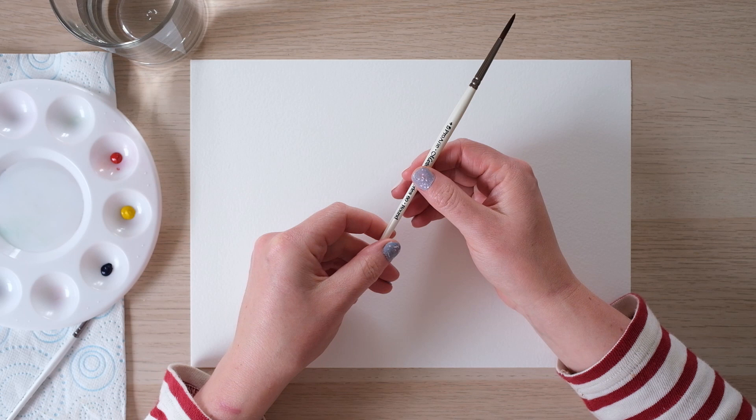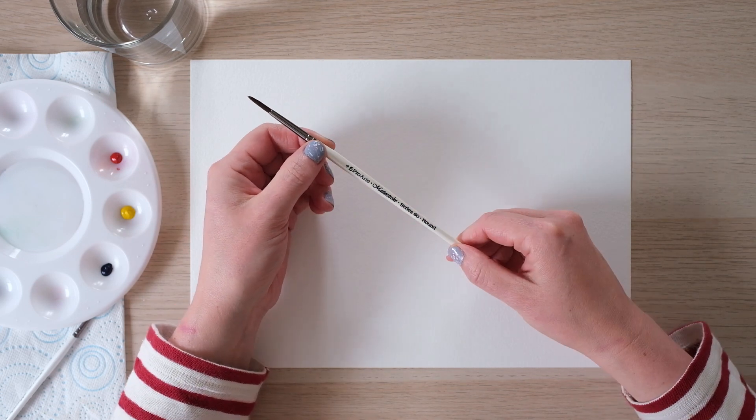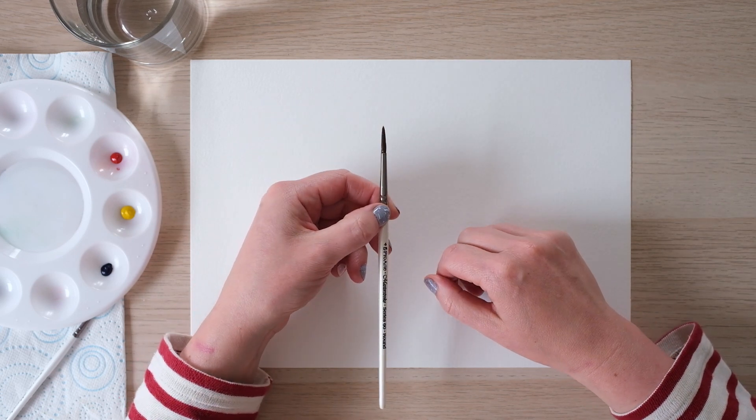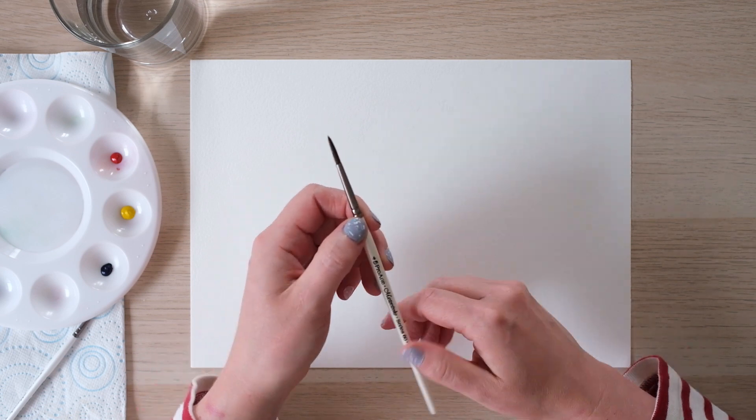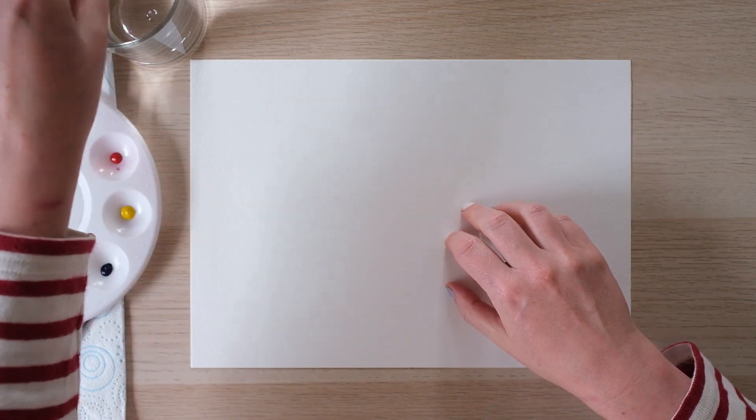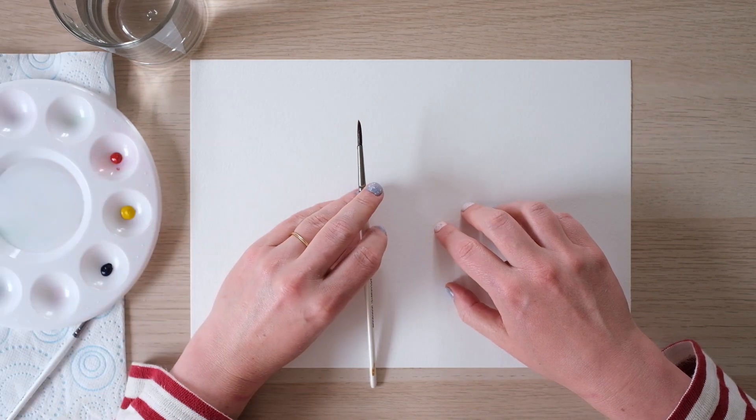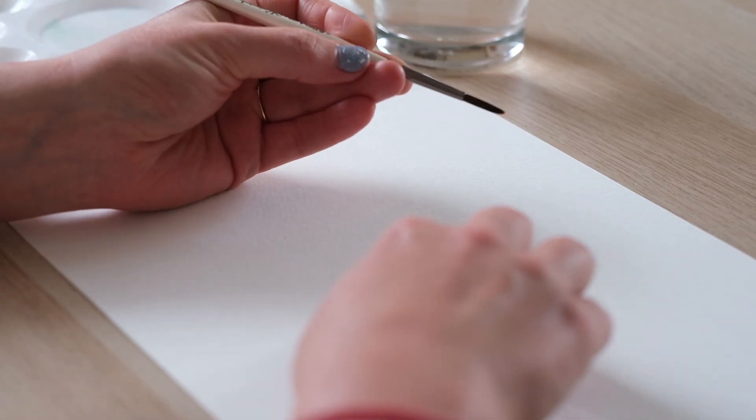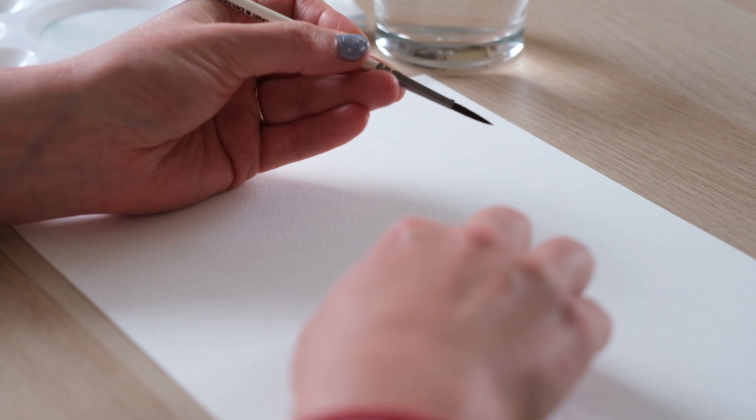Okay today we're going to be painting with the size 4 brush, the rounded point brush, my favourite. Oh do you like my nails by the way? I'm making an effort now I'm on camera. So we always start with a wet brush because that just allows the brush to form a nice rounded point.